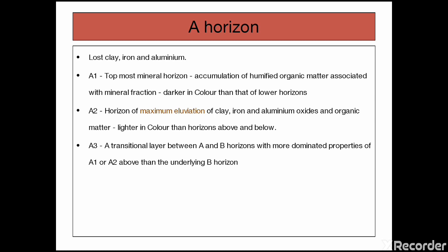In case of A2 we can see maximum eluviation process. In case of A3 it is a transition layer between the A horizon and B horizon. Though it is transitional, it shows most of the characters which are similar to that of A horizon.